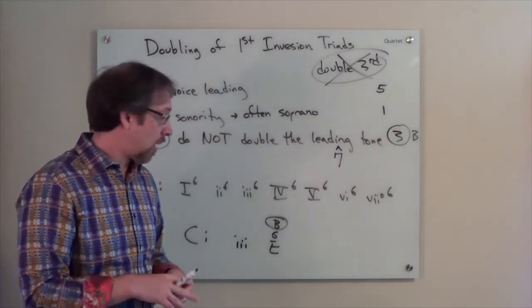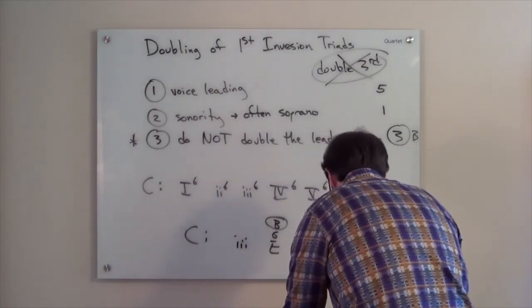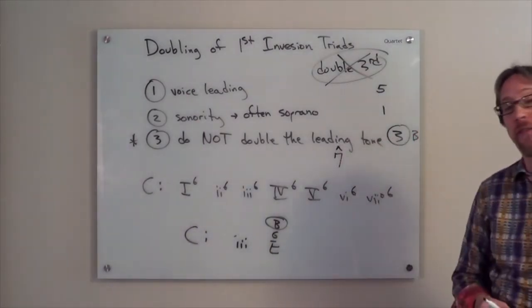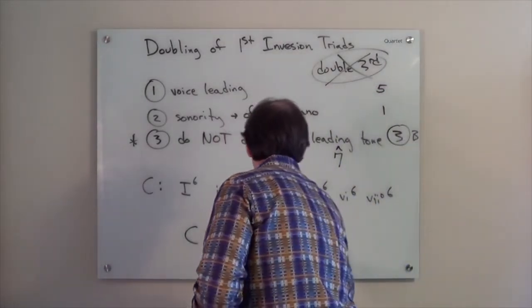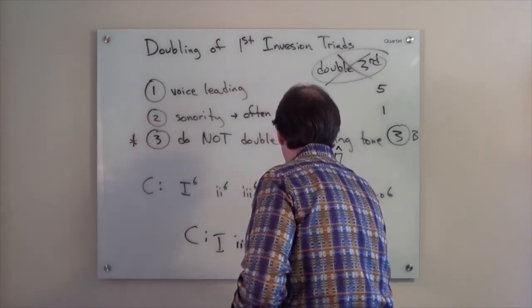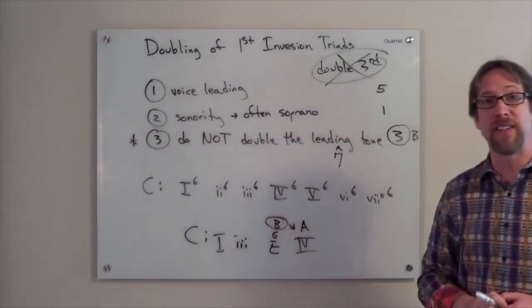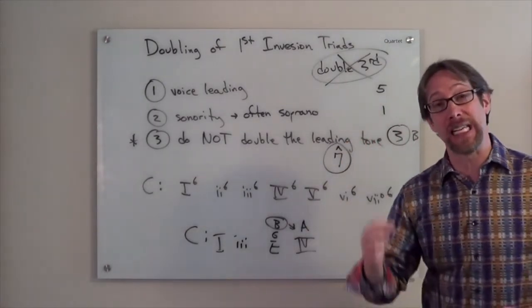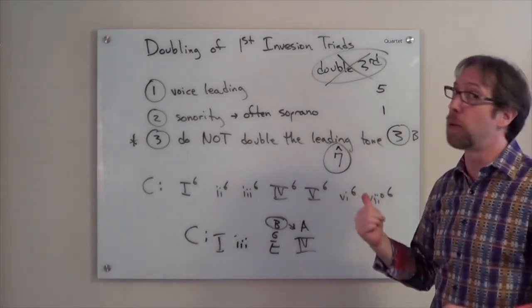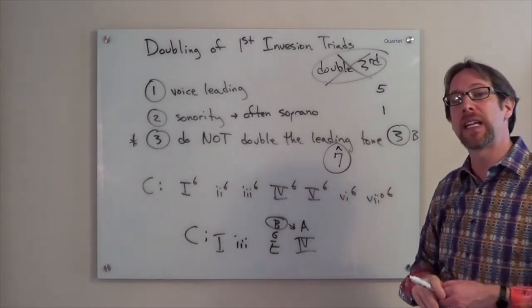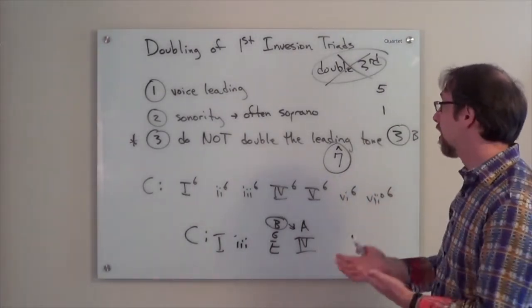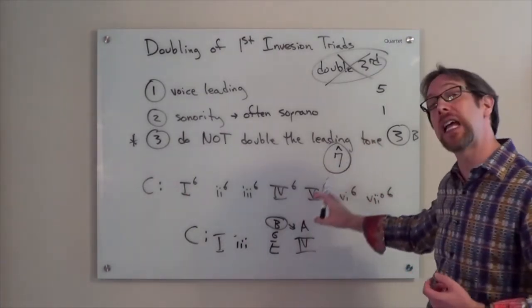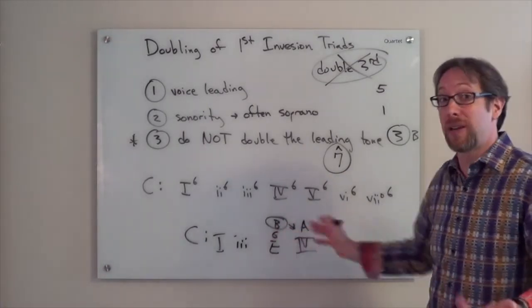If we want to take it to another level of sophistication, we can ask ourselves, well, leading tone has a certain function as well. Is there any way we can use scale degree seven where it's not functioning as a leading tone? Well, the answer is yes. If I were to write a three chord in the key of C major, that would be E, G, B. The B is the seventh scale degree, but this B is not functioning as a leading tone. In a three chord, it doesn't.